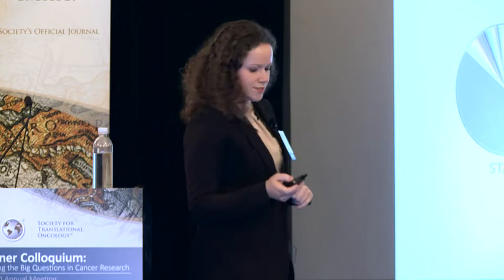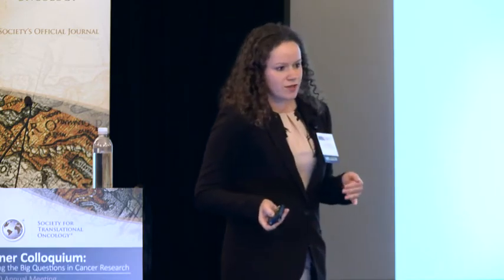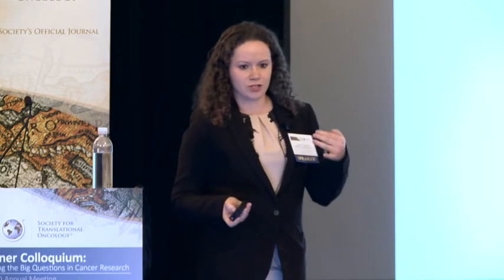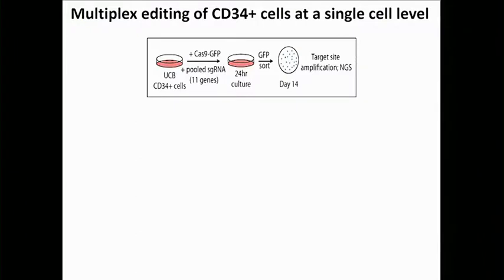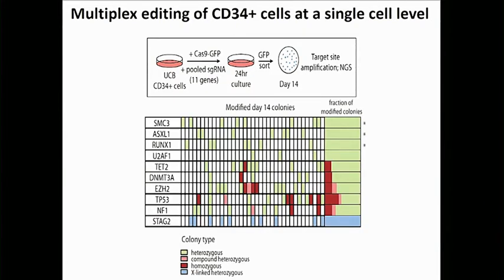We next wanted to see whether on a single-cell level we are actually able to target multiple genes in a cell. Using the cells described previously, plating them on methylcellulose, picking single colonies, and doing target site amplification and next-generation sequencing, we saw that about 50% of our colonies were indeed targeted, and of those about 80% were targeted by multiple genes. This table shows about 40 colonies that were targeted — each column represents a colony, each row represents a gene — showing that many colonies were targeted at multiple different genetic loci.